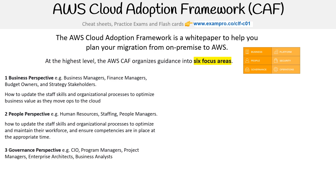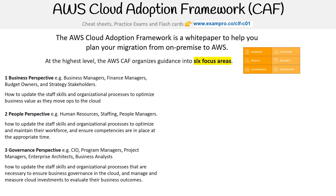The governance perspective covers CIOs, program managers, project managers, enterprise architects, and business analysts. It addresses how to update staff skills and organizational processes necessary to ensure business governance in the cloud, and to manage and measure cloud investments to evaluate business outcomes.